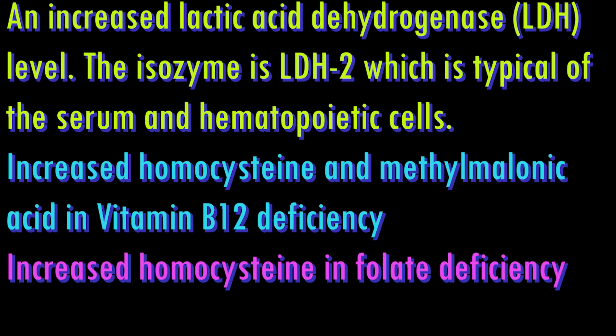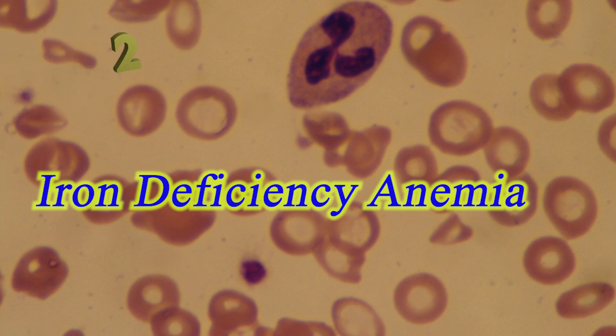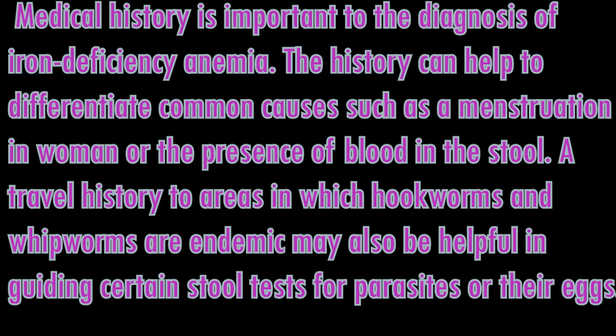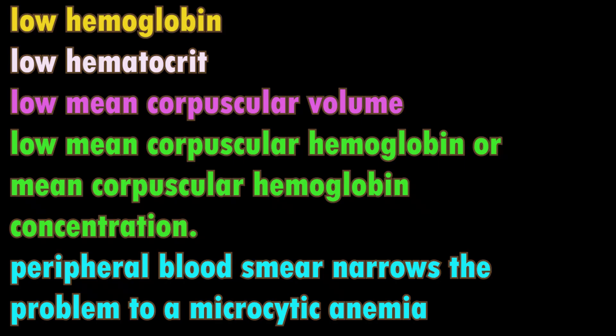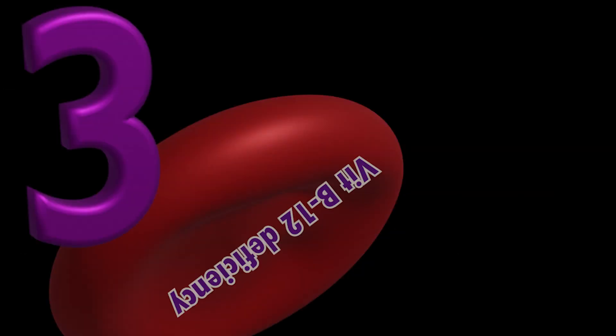Iron deficiency anemia: iron is an important component for production of erythrocytes by bone marrow. Deficiency of iron causes microcytic hypochromic anemia. Iron is primarily absorbed in the intestine, in particular the duodenum. Certain factors increase or decrease absorption.